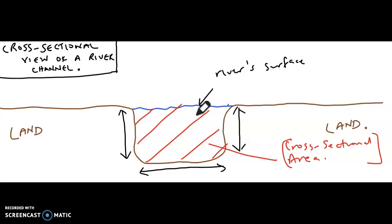The sides of the river — referring to this region — we have side A, side B, and side C. When you add all of them up, A plus B plus C, that will give you the wetted perimeter.